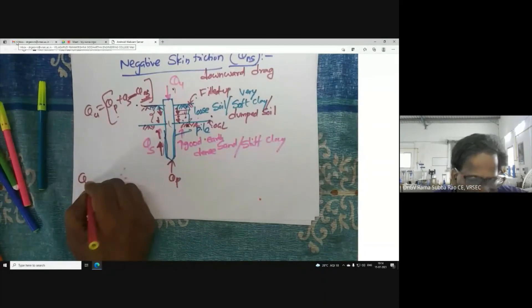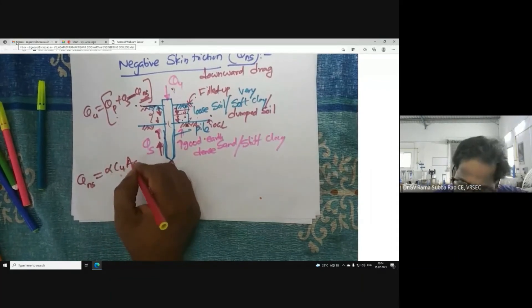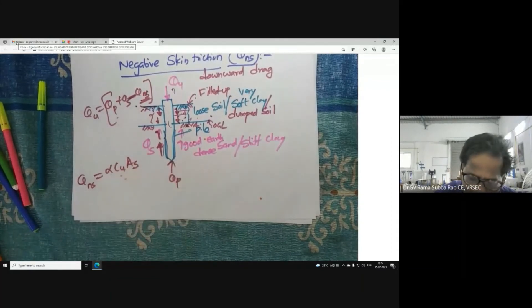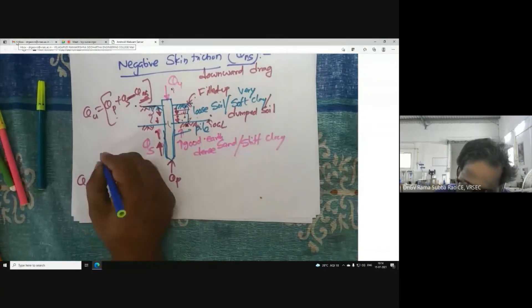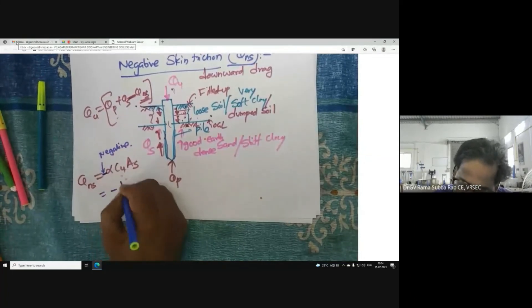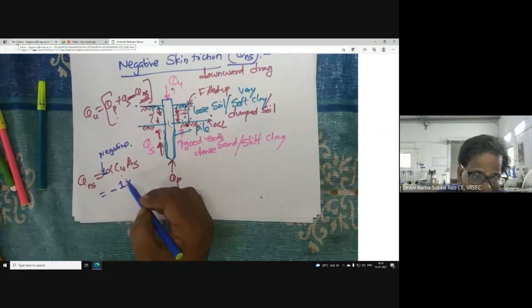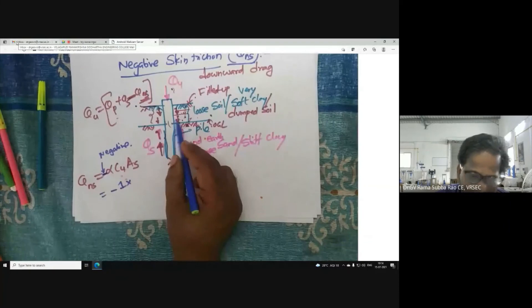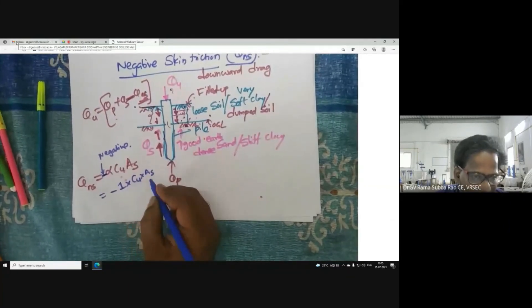Using the alpha method: alpha × cu × As. Someone can ask me, 'Sir, what are you going to write?' Now I'm putting minus for negative. What is alpha? Take one if it is very soft clay, as very soft clay has more interaction with the pile. So: -1 × cu × As.